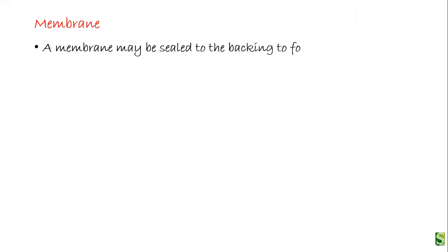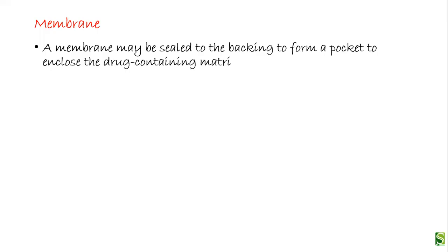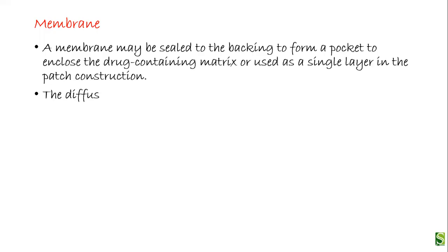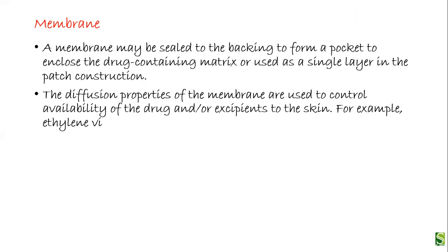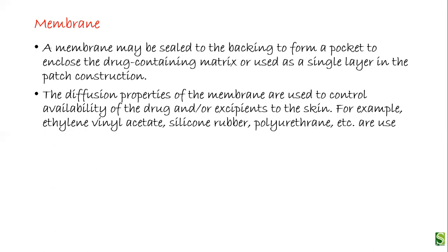A membrane may be sealed to the backing to form a pocket to enclose the drug-containing matrix, or it may be used as a single layer in the patch construction. The diffusion properties of the membrane are used to control the availability of the drug and excipients to the skin. For example, ethylene vinyl acetate, silicone rubber, and polyurethane are used as rate controlling membranes.